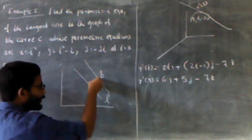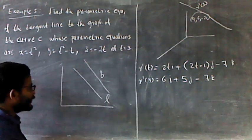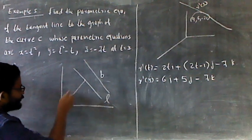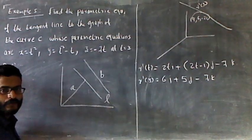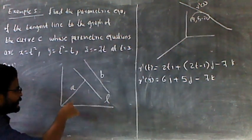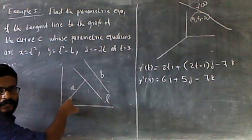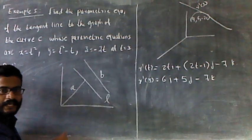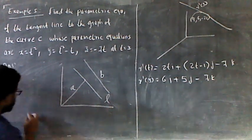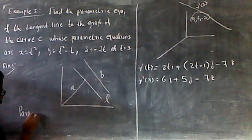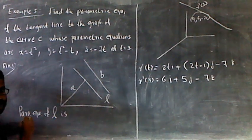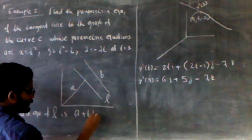The first solution is zero. The second solution is zero. It's a position vector A. This one is parallel to B. The parametric equation of L: L equals A plus t times B.